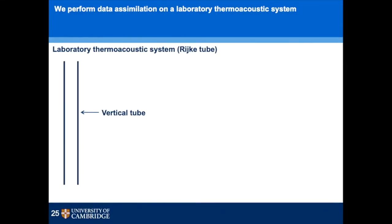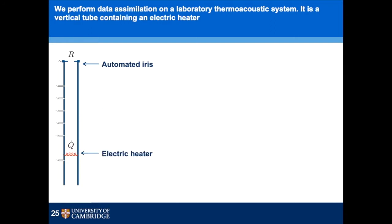We didn't do this on a rocket or airplane engine — we did this on a very simple thermo-acoustic system called a RECA tube. It's just a vertical tube, and in our case we have an automated iris at one end which allows us to change the acoustic reflection coefficient at that end, and then an electric heater inside the tube. We can vary the heater power from zero up to around 380 watts.